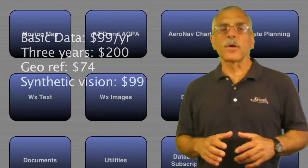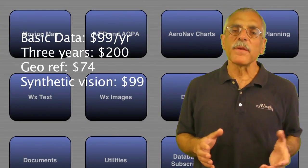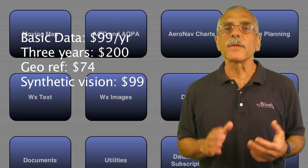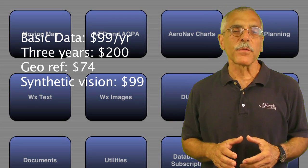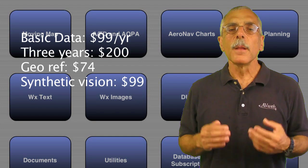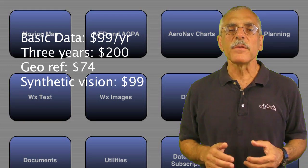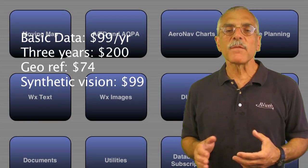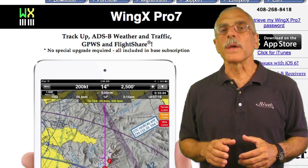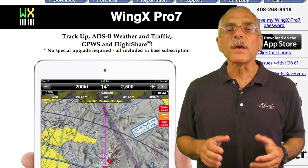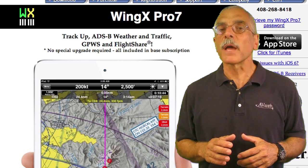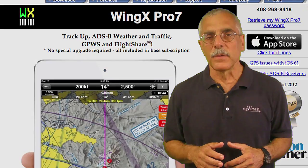WingX costs $99 a year for the basic data, including all the charts and approach plates, or they'll give you a nice price break at $200 for three years. An additional $74 a year buys geo-referencing for the plates, and for synthetic vision, add another $99 a year. For more information on WingX, see HiltonSoftware.com. For AvWeb, I'm Paul Bertarelli reporting. Thanks for watching, and we'll see you at Oshkosh.